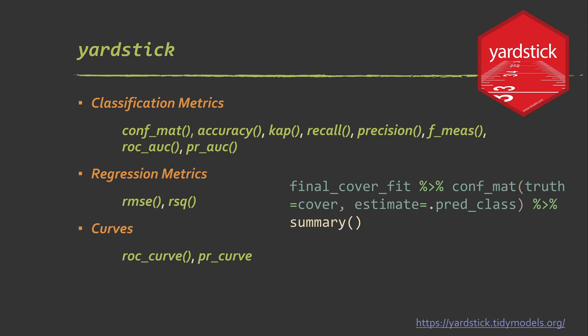Okay, so Yardstick, again, is the tool for doing your assessment. So there's functions for classification metrics. So this conf mat function creates a confusion matrix. Overall accuracy, kappa, recall, precision, F score, ROC, area under the curve from the receiver operating characteristic, and area under the curve for the precision recall. RMSE and R squared for regression generates some curves.